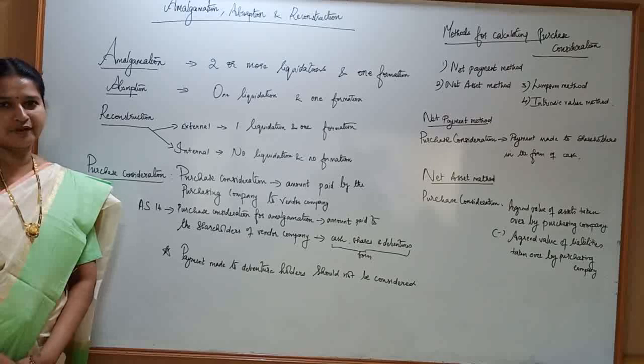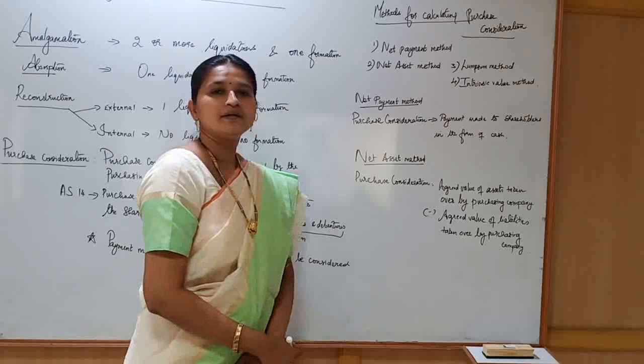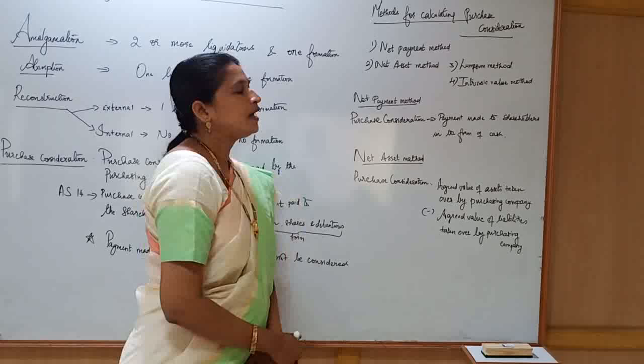Let us now look at the methods for calculating purchase consideration. There are four methods: net payment method, net asset method, lump-sum method, and intrinsic value method. But basically two methods are followed to calculate purchase consideration, and those two methods are net payment method and net asset method.